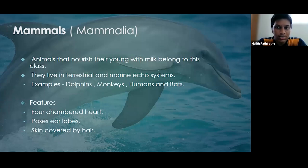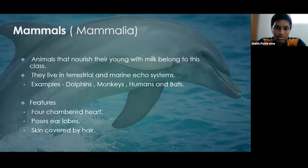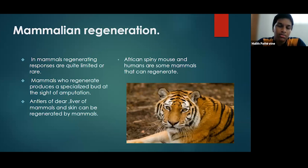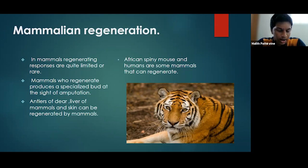We will first talk about regeneration in mammals. Mammals are animals that nourish the young with milk, living in terrestrial and marine ecosystems. Examples include dolphins, monkeys, humans, and bats. Special features include a four-chambered heart providing double blood circulation, earlobes, and skin covered by hair. In mammals, regenerating responses are quite limited. Mammals that do regenerate produce a specialized bud at the site of amputation called a blastema, similar to the amphibian blastema. The deer's antlers, the liver of mammals, and skin can be regenerated.